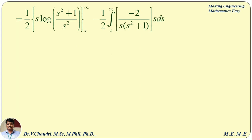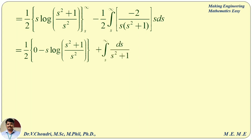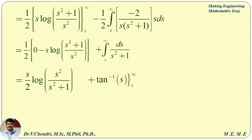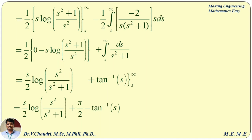Substituting the limit values: at the upper limit infinity, log((s²+1)/s²) tends to 0, so 0 times anything equals 0. The first term gives (1/2)[0 − s·log((s²+1)/s²)]. The second term: −(1/2)·(−2) cancels to give plus integral from s to infinity of ds/(s²+1). Using n·log m formula, the first term becomes (s/2)·log(s²/(s²+1)). The second term gives tan⁻¹(s) with limits s to infinity, yielding π/2 − tan⁻¹(s). This is the required answer, and π/2 − tan⁻¹(s) can also be written as cot⁻¹(s).